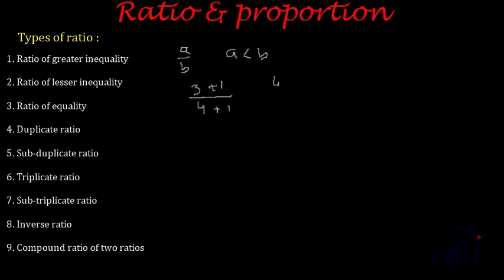The value of 3 by 4 is equal to 0.75, and after adding 1 to both terms we get 4 by 5, which equals 0.8. So for the ratio of lesser inequality, if I add a constant to both terms, the resultant ratio will always be greater than the original ratio.